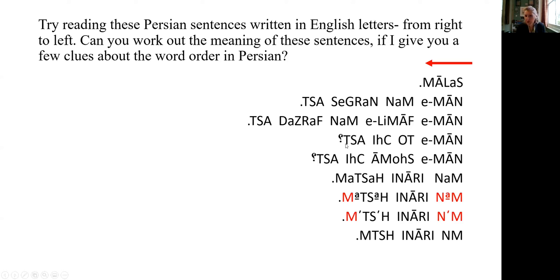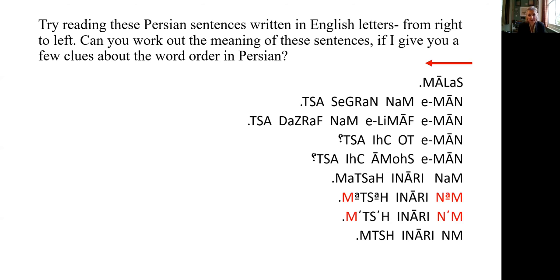I'm going to be a bit nosy and ask about you. 'Name tu che ast?' — Tu, again in many languages, the second person singular is 'tu' or 'thou' or 'you.' Persian, unlike English but like very many languages, has a plural second person. We can use that when talking to more than one person, or as a formal, very polite 'you.'